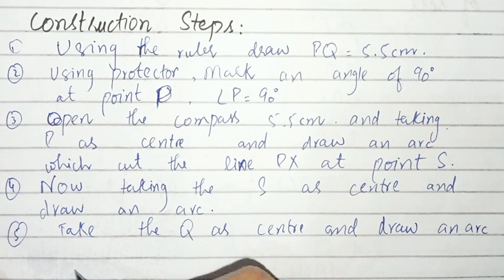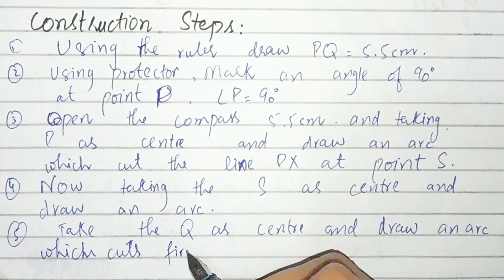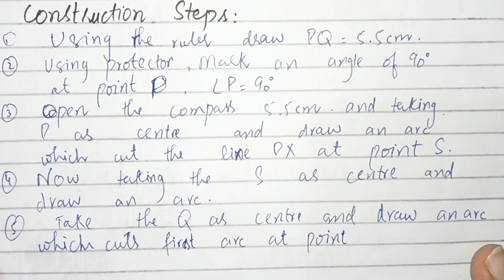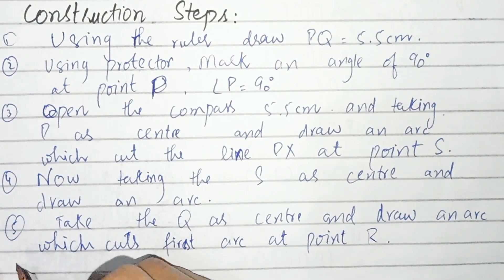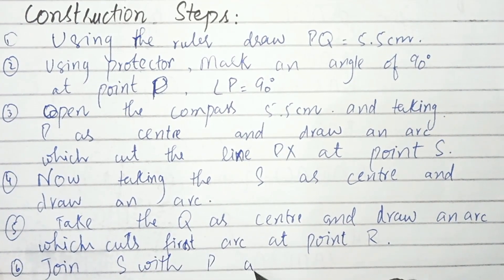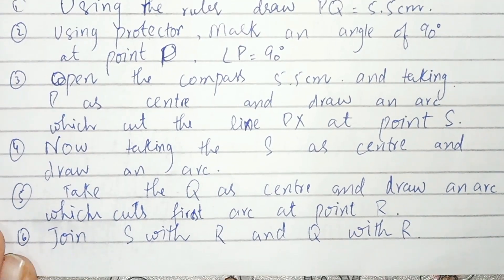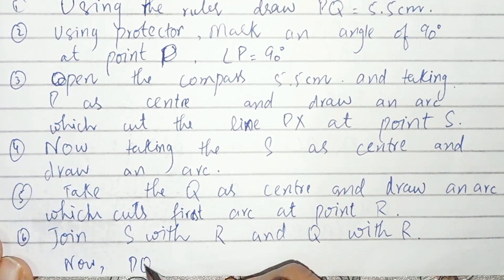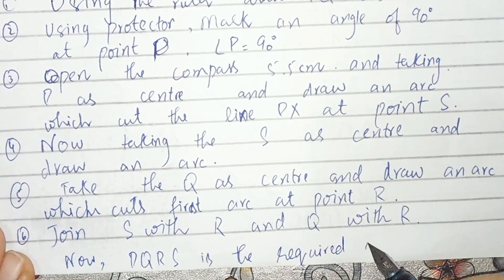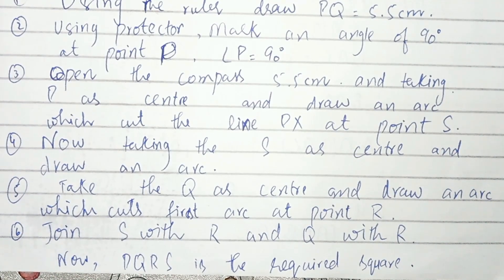Taking S as center, draw an arc, and taking Q as center, draw an arc which cuts the first arc at point R. Join S with R and Q with R. Now PQRS is the required square.